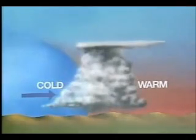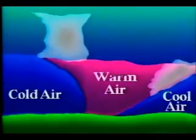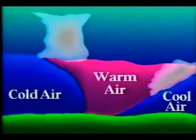Sometimes the boundary between a cold and warm air mass doesn't move. In that case, it is referred to as a stationary front. Sometimes when a cold front is overtaking a warm front, the warm air is actually lifted above the ground. This may create drastic temperature changes and violent weather. This type of rare front is called an occluded front.